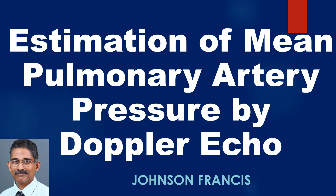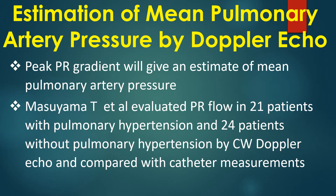Estimation of mean pulmonary artery pressure by Doppler echocardiography. The early diastolic pulmonary regurgitation gradient will give an estimate of mean pulmonary artery pressure. Masuyama and associates evaluated pulmonary regurgitation flow in 21 patients with pulmonary hypertension and 24 patients without pulmonary hypertension by continuous wave Doppler echocardiography, and compared results with catheter measurements.